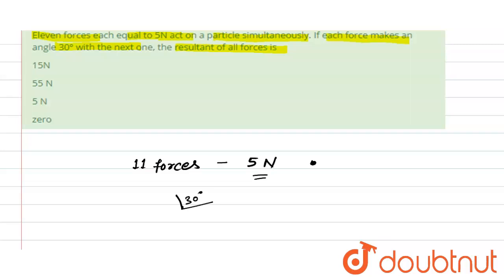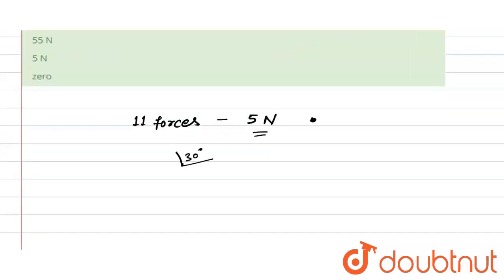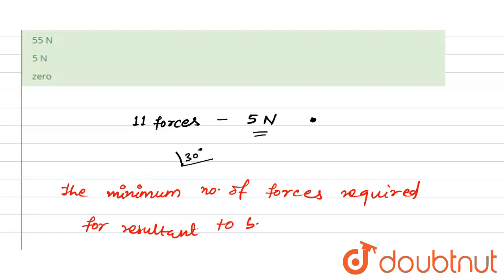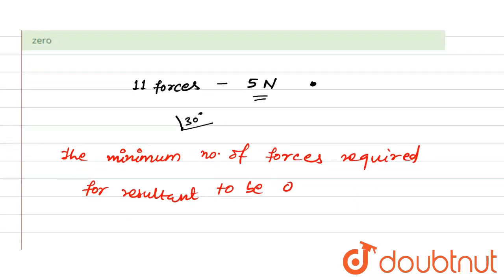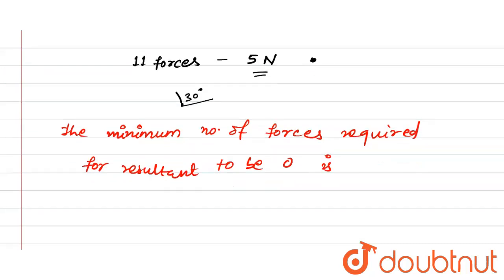The minimum number of forces required for resultant to be 0 is calculated as follows: the total angle is 360 degrees divided by 30, which equals 12.